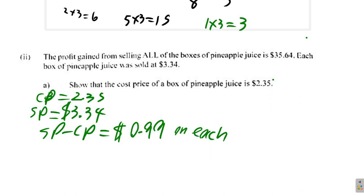Now, if you make a profit of $35.64 total, and each of them makes a profit of $0.99, then you should be able to divide $35.64 by $0.99 and get a whole number. So, let's see.